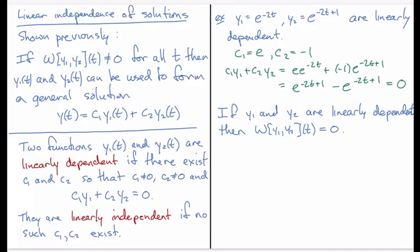Okay so let's just write down what that means. So for y1 and y2 to be linearly dependent means there are c1 and c2 constants nonzero so that c1*y1 plus c2*y2 is equal to 0.